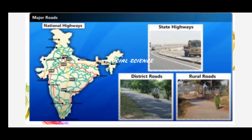The six classes of roads in India are: the Golden Quadrilateral superhighways, national highways, state highways, district roads, other roads linking rural areas, and last but not least, border roads.